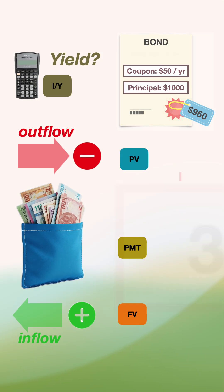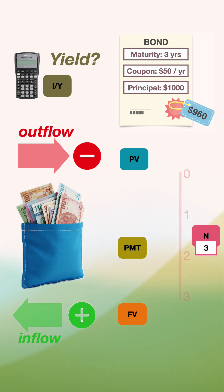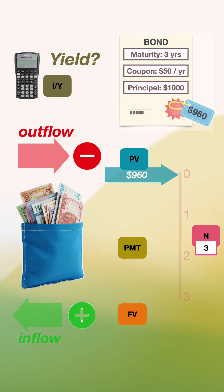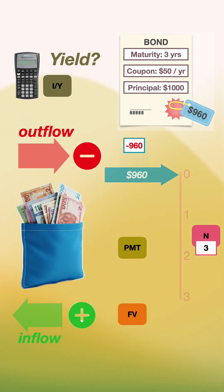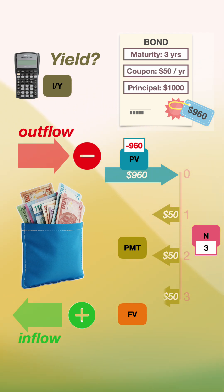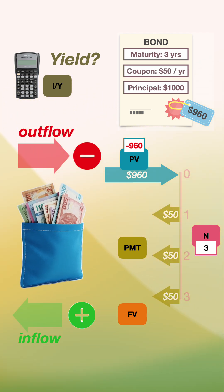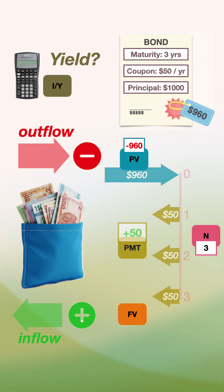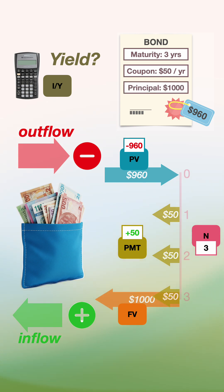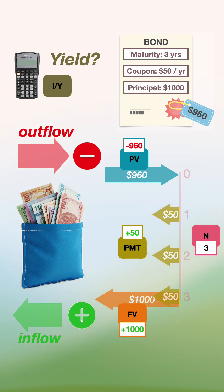First, the number of periods is three years. You invest $960 — that's money leaving your pocket, so your present value is minus $960. You receive $50 each year — that's money entering your pocket, so your payment is plus $50. At maturity, $1,000 goes back into your pocket, so the future value is plus $1,000.